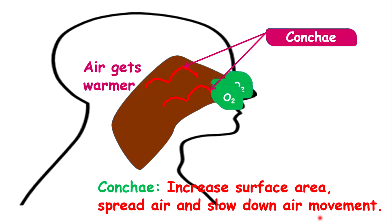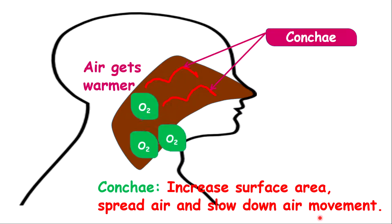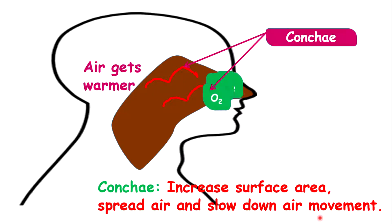Inside the nasal cavity we have what are called conchae — one of them is known as a concha. The conchae are protruding bones within the nasal cavity. Their purpose is to increase the surface area of the nasal cavity. They also help to spread and slow down air molecules so they can become warm. So as air enters the nasal cavity, air is also becoming warmer.